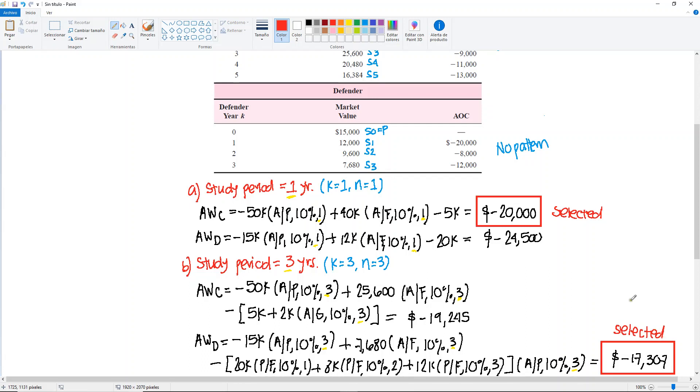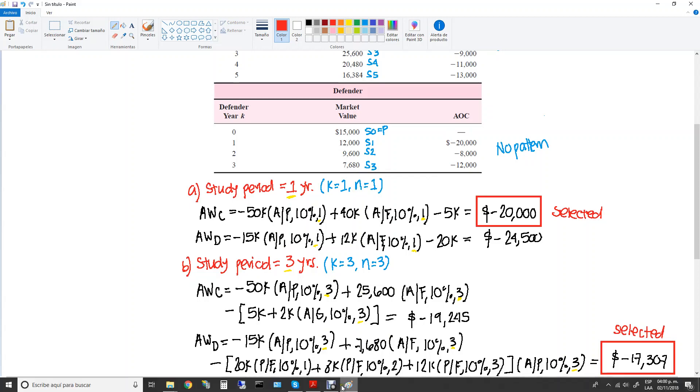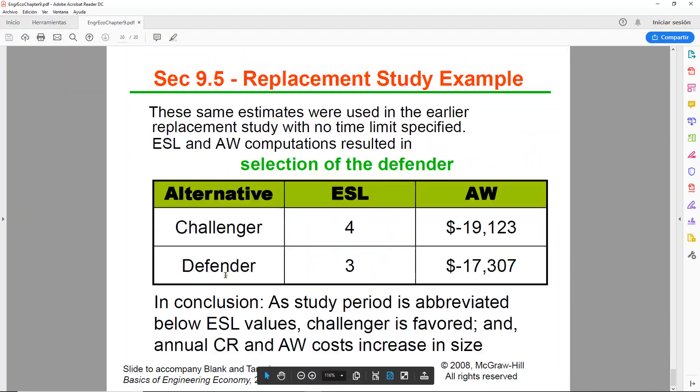So you will see that depending on the study period that you choose, the result may vary. So we can see here in the very last slide how as the study period is abbreviated below the ESL values, because this was the ESL that we had computed previously in example 9.3, the challenger will be favored.